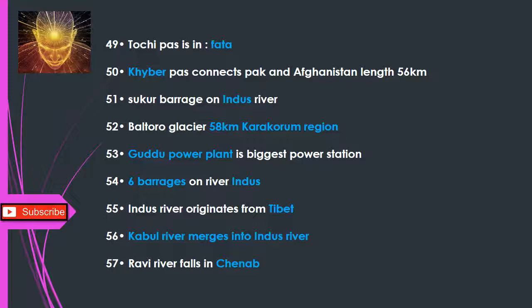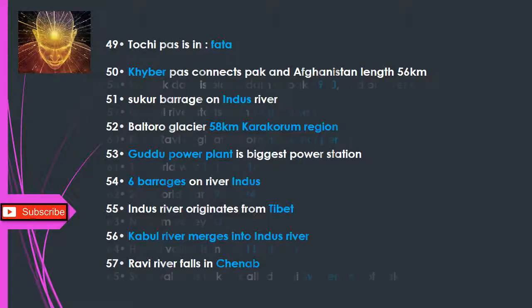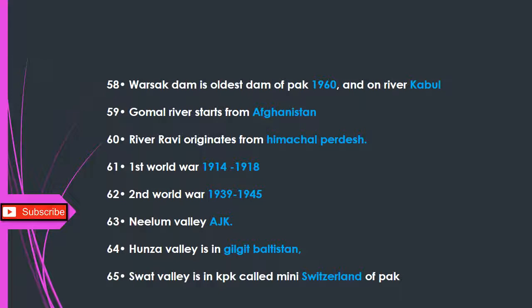Q58: Warsak Dam is the oldest dam of Pakistan, built in 1960, on River Kabul. Q59: Gomal River starts from Afghanistan. Q60: River Ravi originates from Himachal Pradesh. Q61: First World War — 1914 to 1918. Q62: Second World War — 1939 to 1945. Q63: Neelum Valley is in AJK. Q64: Hunza Valley is in Gilgit Baltistan. Q65: Swat Valley is in KPK, called the Mini Switzerland of Pakistan.